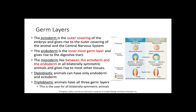Now let's discuss germ layers. There are a couple of different cases in terms of the number of germ layers that an organism will have. Diploblastic animals have only endoderm and ectoderm, whereas triploblastic animals are going to have all three germ layers, and all bilaterally symmetric animals are triploblastic.